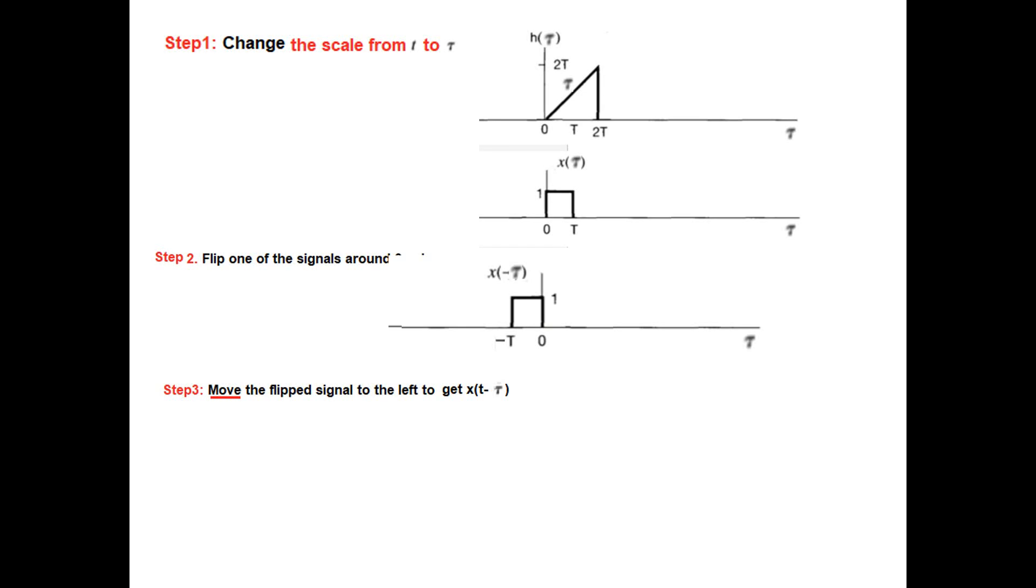Move the flipped signal to the left to get Xt minus tau. So actually we are adding T here and T here. So it will be T and T minus capital T. So we moved it to the left. It is now T and T minus capital T.